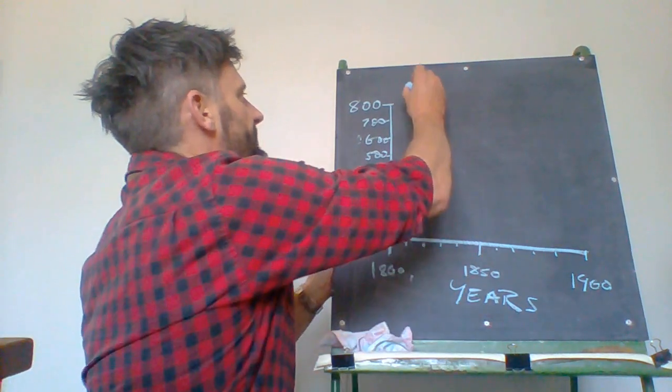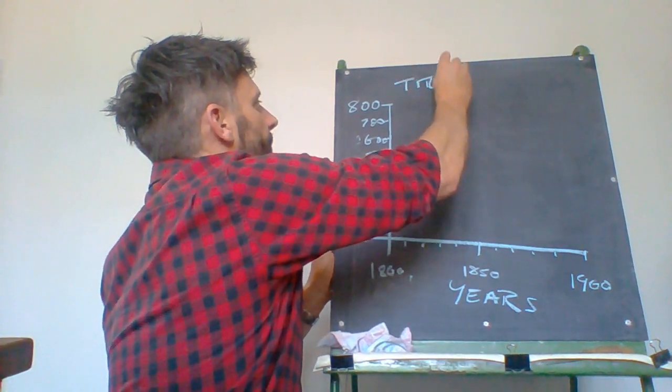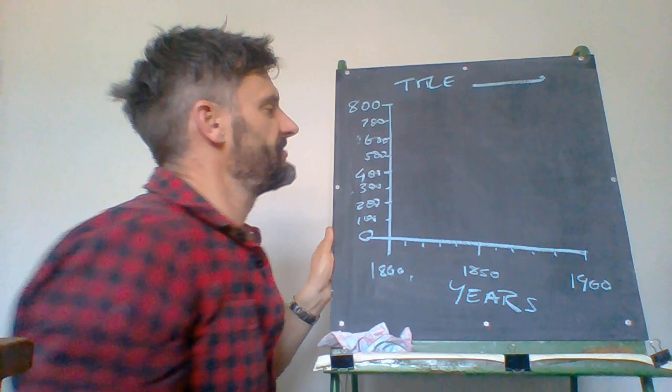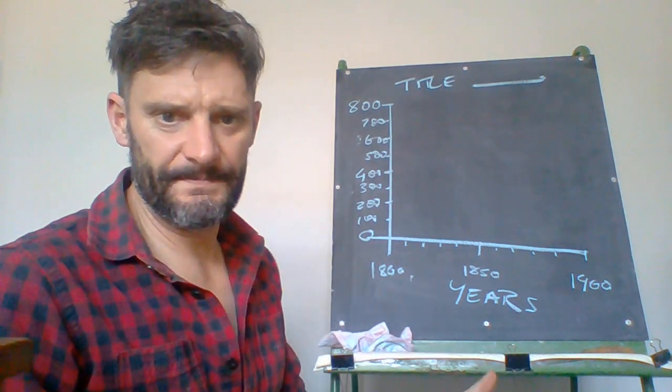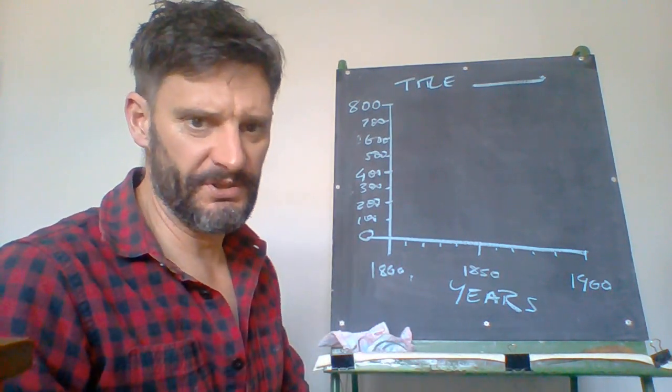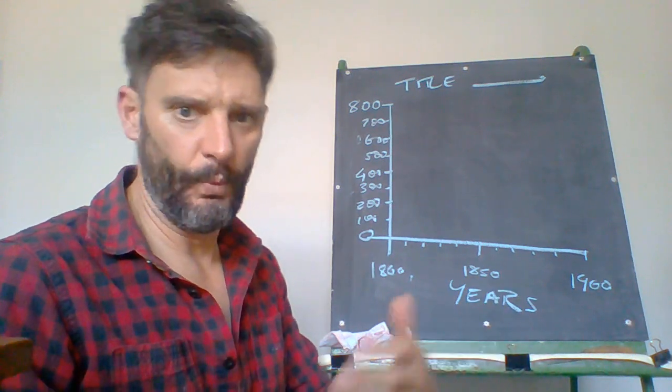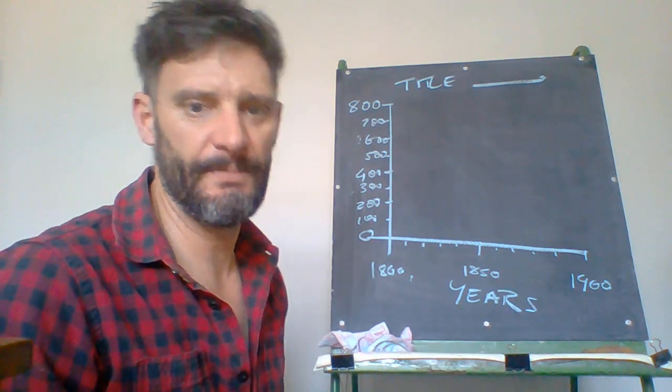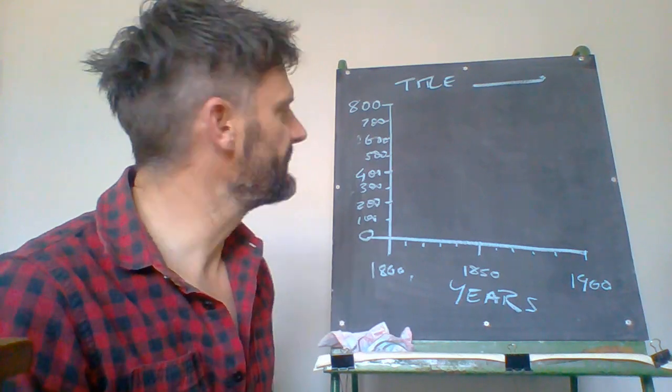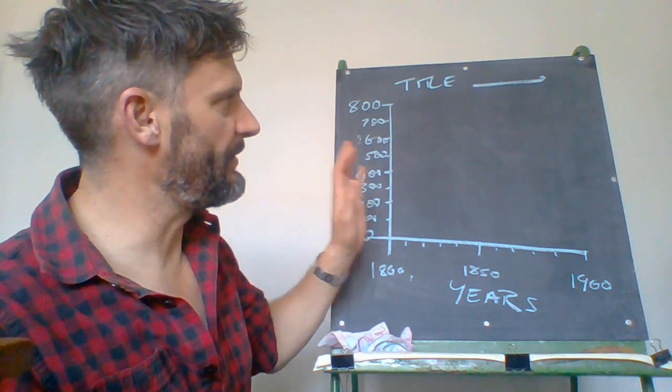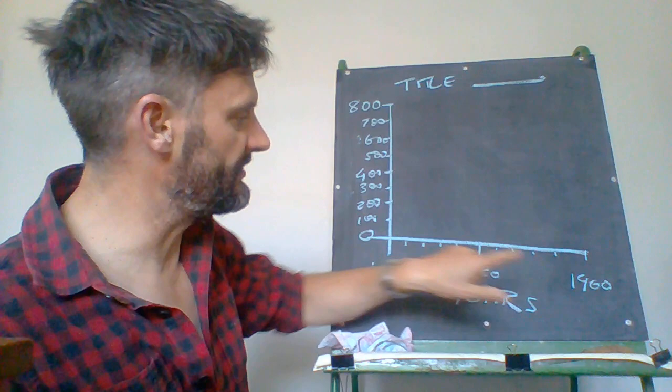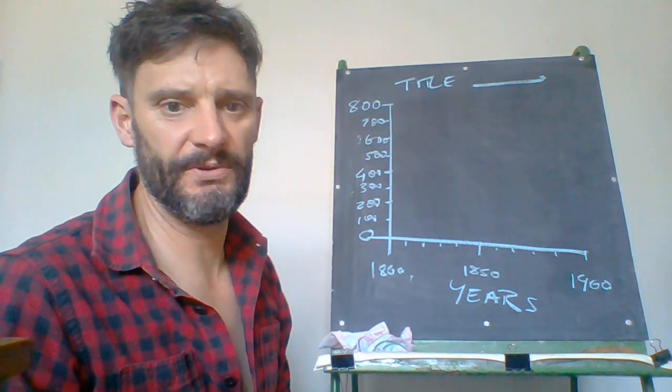Finally before we even graph is we need to add a title. The title is going to say what is it? It's a line graph. When was it? It was for 1800 through 1900 and what is it showing? It's showing the European population in New Zealand. So a line graph showing European population in New Zealand between 1800 and 1900 and that would be your title.